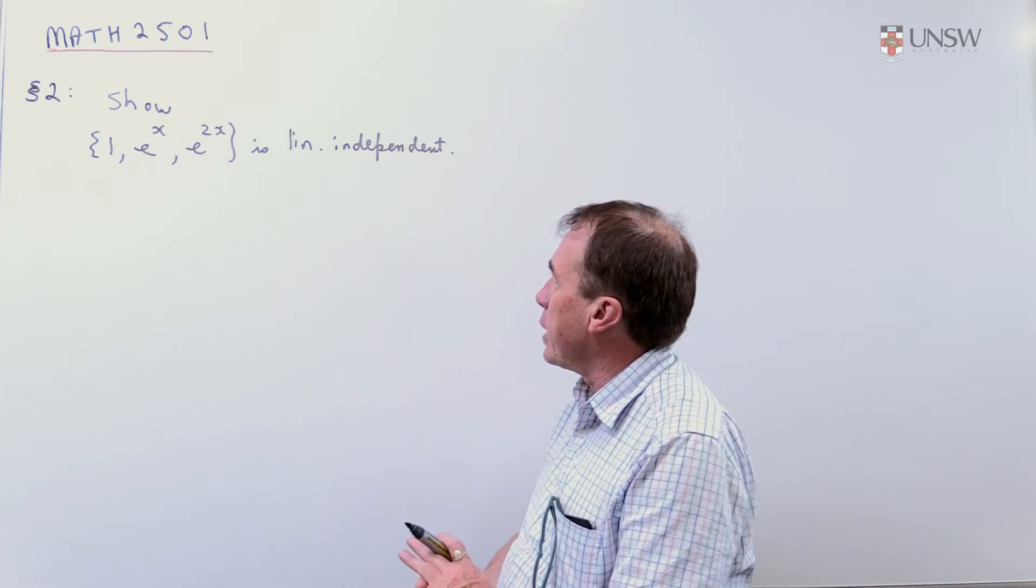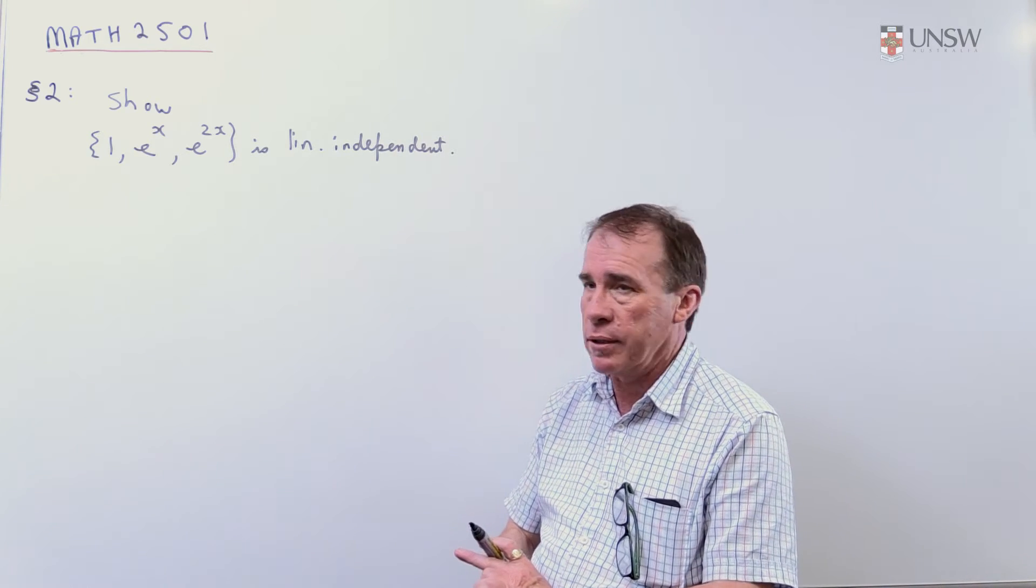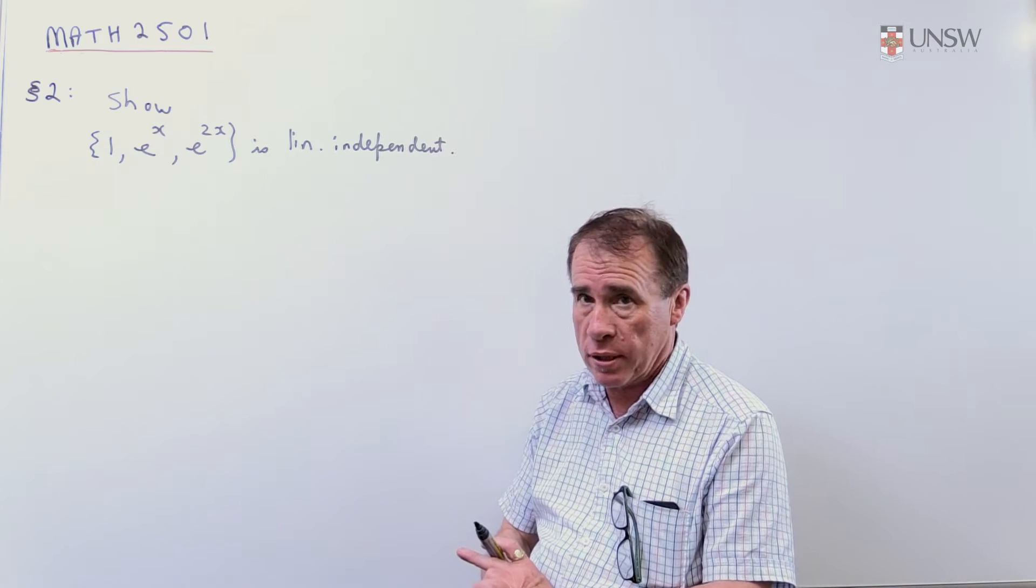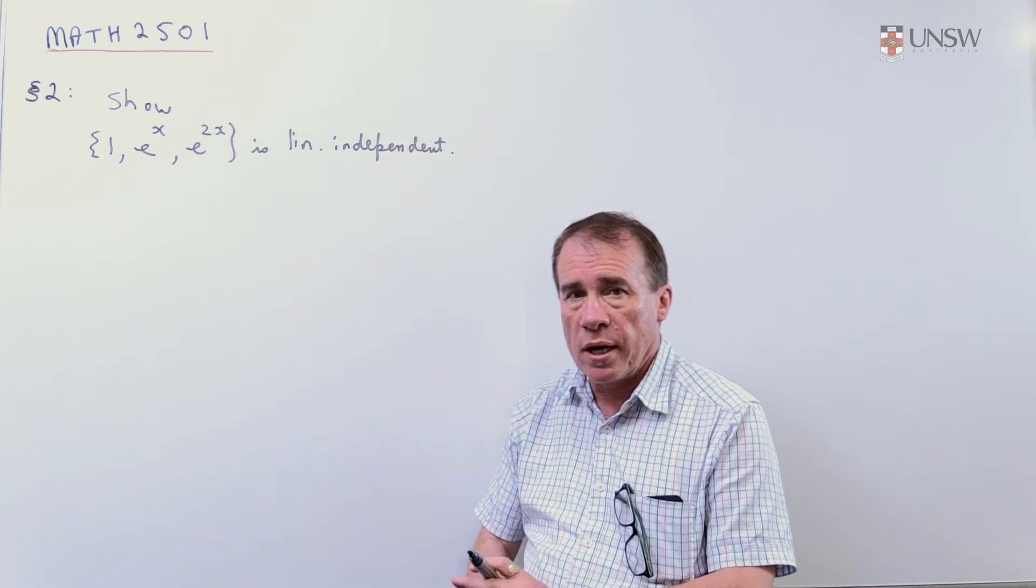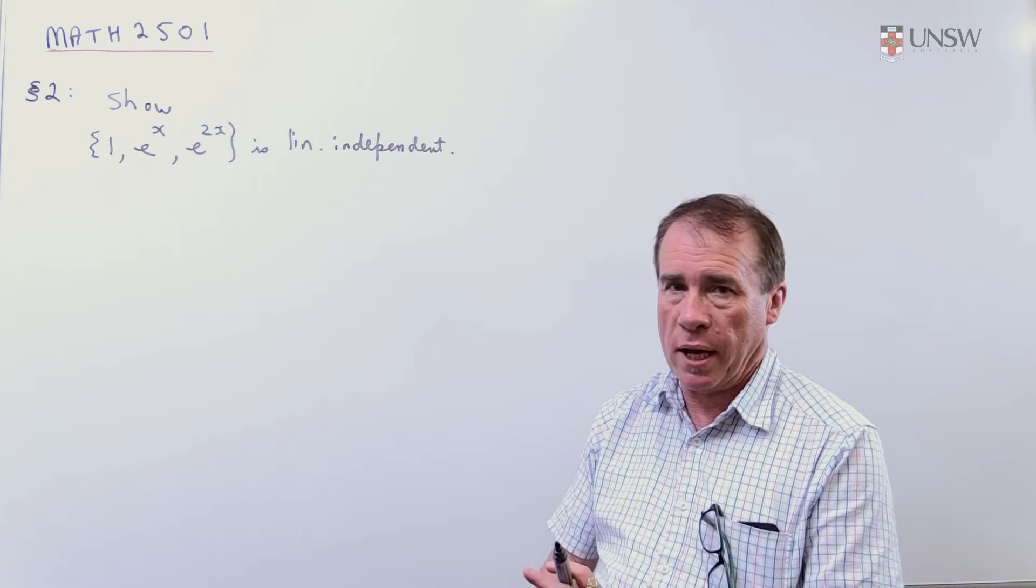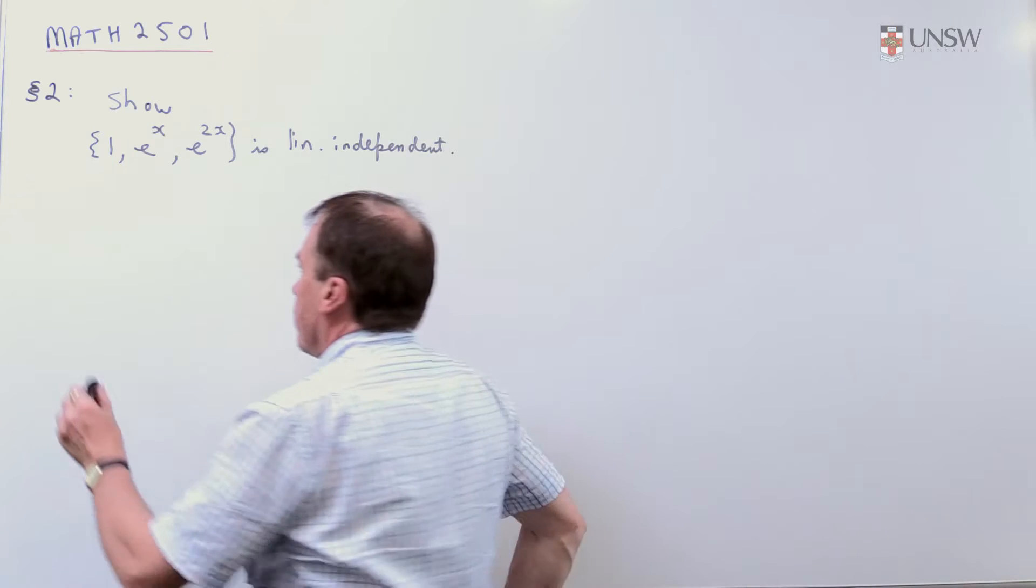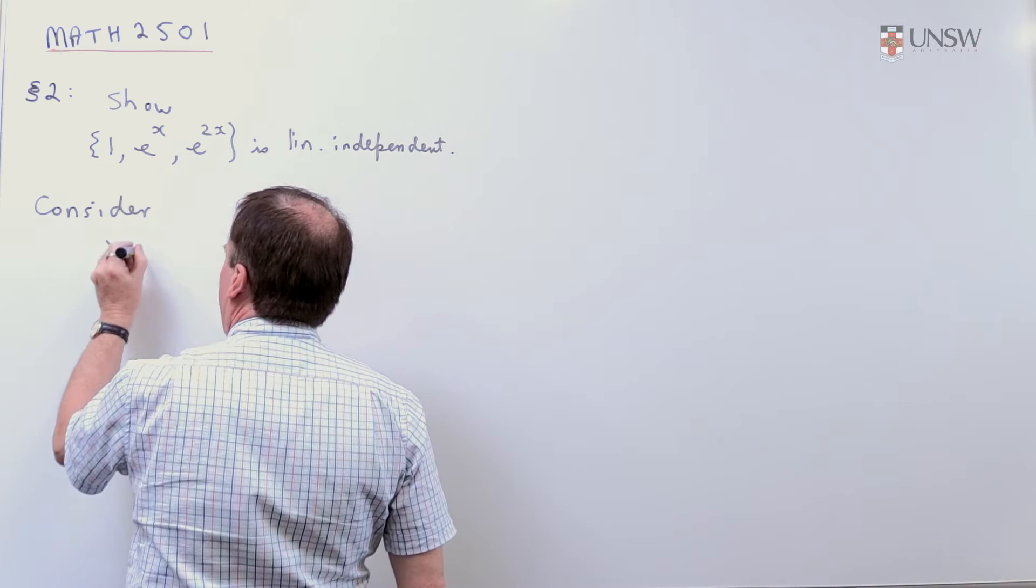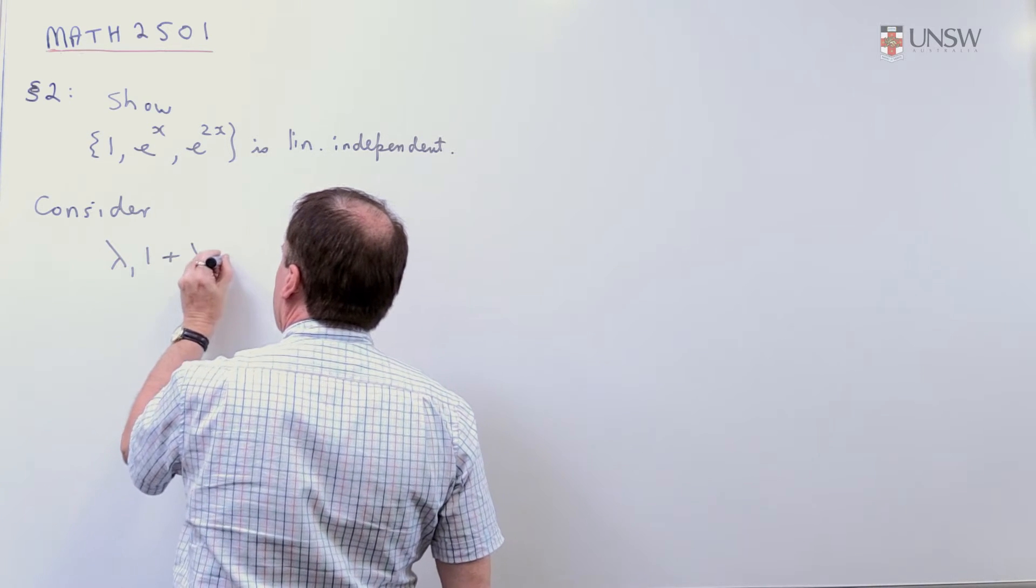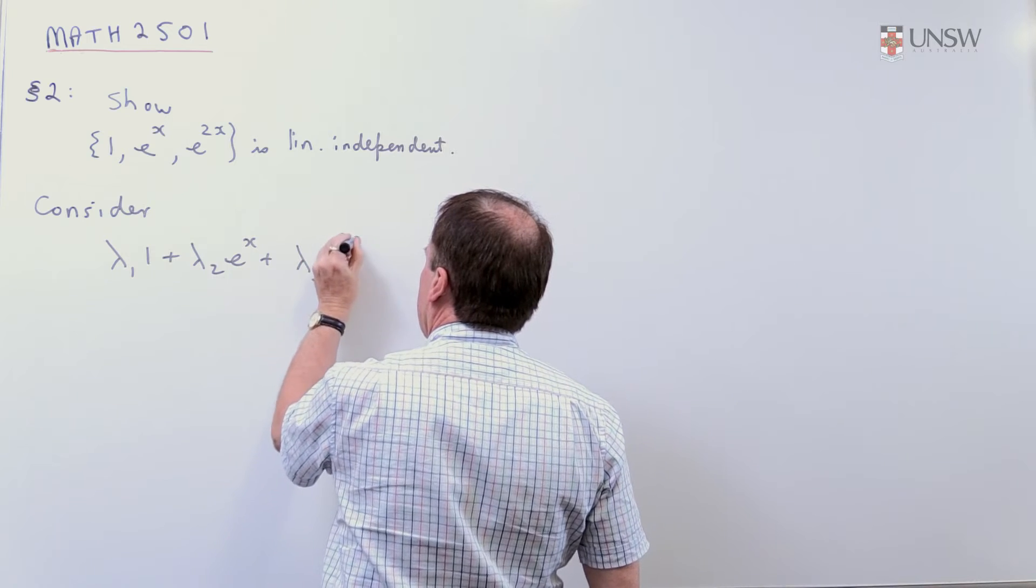So in order to check this is independent, we start out by trying to build the zero object, in fact here it will be the zero function, from these three objects, from these three functions, and we show the only way of doing that is the trivial way, where all the scalars are zero. So our first step, consider lambda_1 times 1 plus lambda_2 times e^x plus lambda_3 times e^(2x).